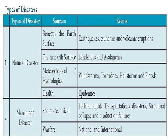Now let us learn about the different types of disasters. There are two types: natural disasters and man-made disasters. A natural disaster could be beneath the surface of the earth, on the surface of the earth, meteorological, hydrological, or health-related. If occurring beneath the earth's surface, it can cause earthquakes, tsunamis, and volcanic eruptions.